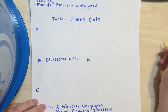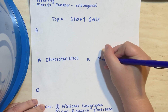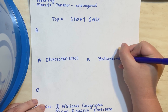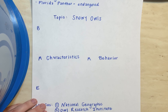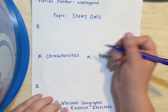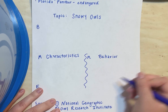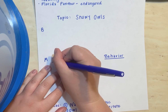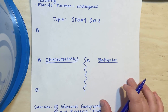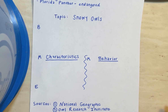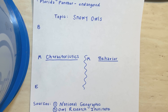Another middle I'm going to use is behavior — how do they act, what do they do in the wild. These are really important ideas that the reader would need to know to understand snowy owls. I'm going to underline those two middle main ideas so I know that is what my whole middle is going to be about. I've already done my research, so I'm going to fill it in and model how to complete this BMME plan.